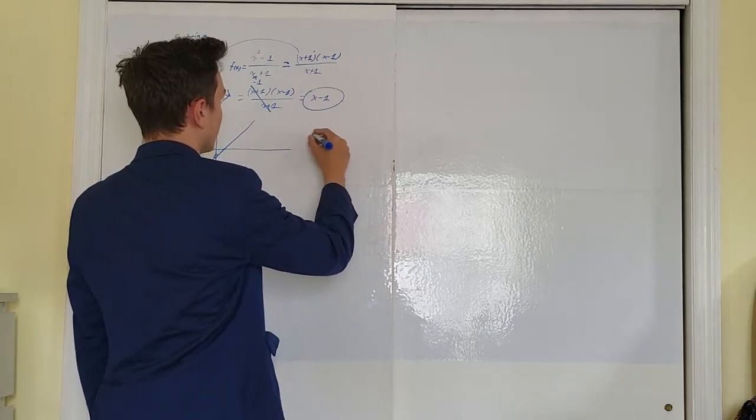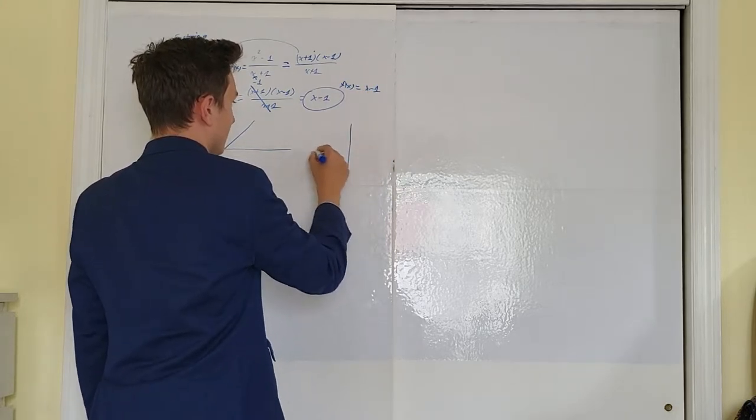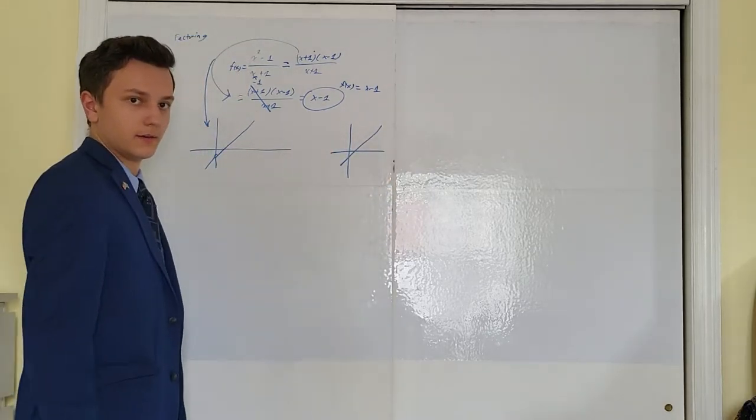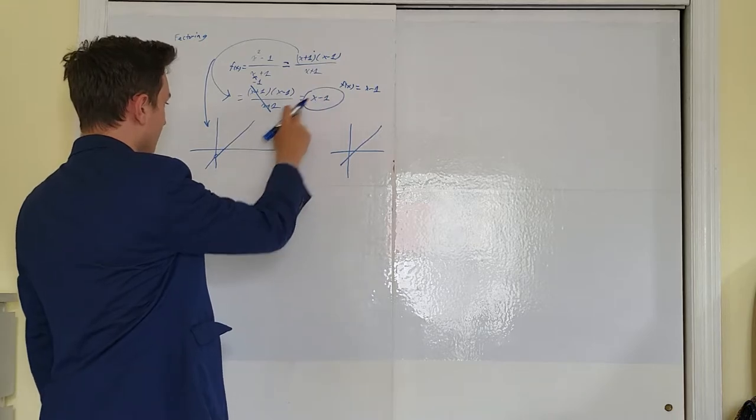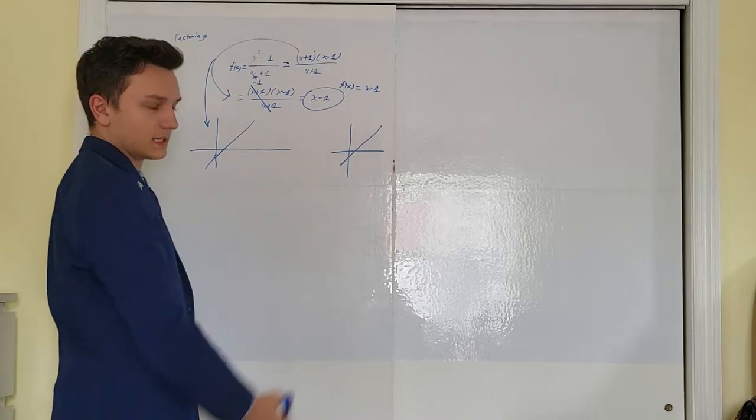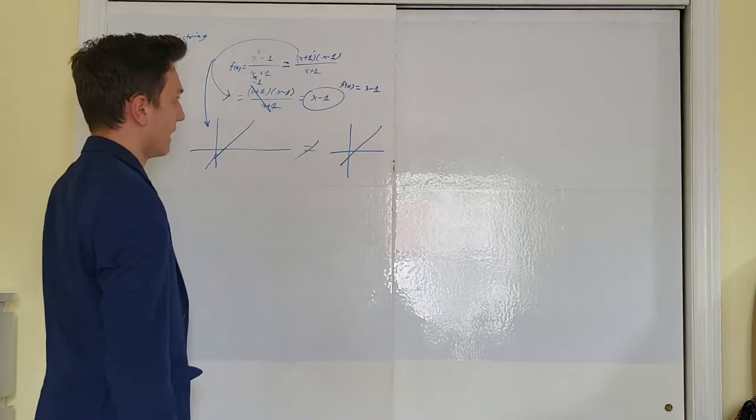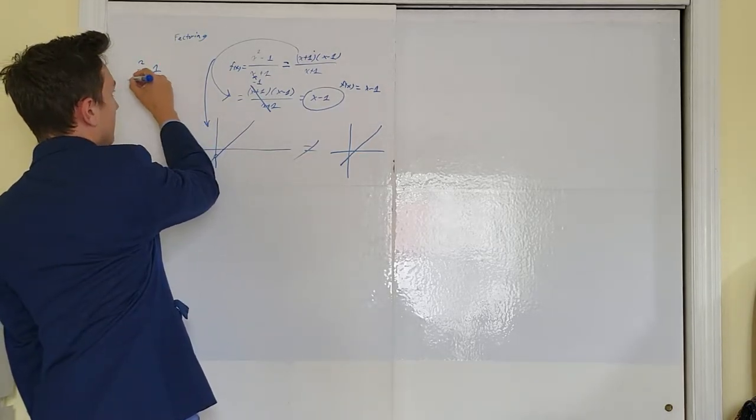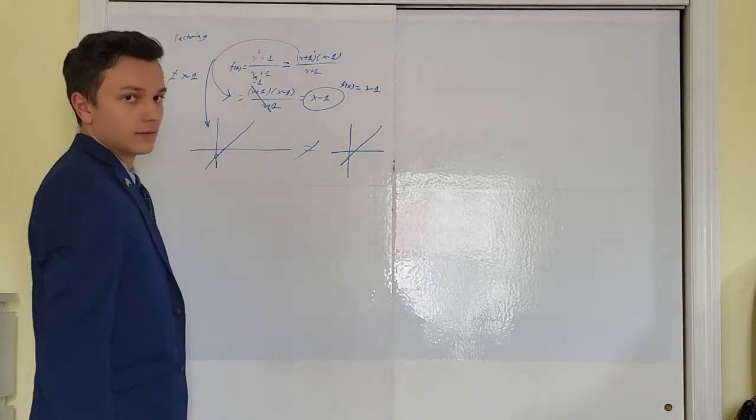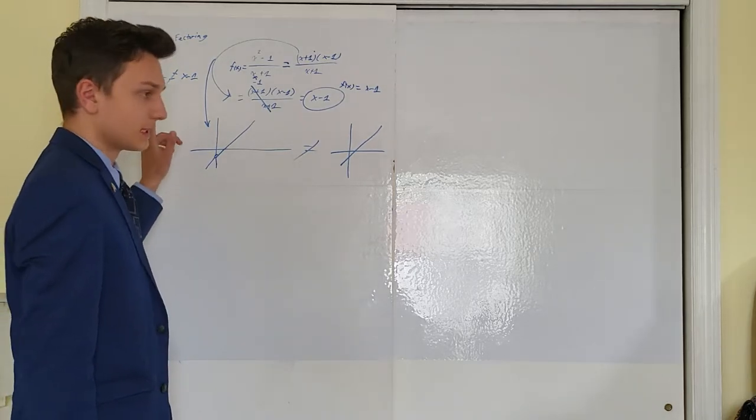This function right here, f(x) equals x minus 1, if we draw that graph, there's no discontinuity there. Okay, because if we plug in x equals negative 1 into here, there's no divide by 0 error, there's no discontinuity. Therefore, these are not the same graph. And x squared minus 1 over x plus 1 does not equal x minus 1. Okay, this is a very important topic that I want you guys to look at and understand right now.